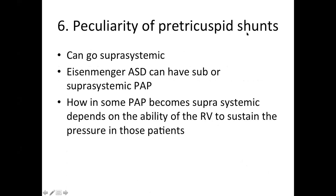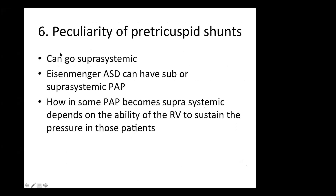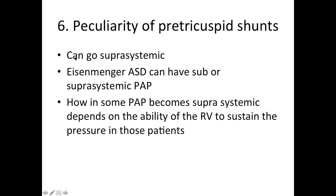A peculiarity of pre-tricuspid shunt compared to post-tricuspid shunt is that pre-tricuspid shunt can become suprasystemic, whereas post-tricuspid shunt cannot. So a patient with ASD and Eisenmenger syndrome can have subsystemic, systemic, or suprasystemic PA pressure. How it becomes suprasystemic in some patients depends on the ability of the right ventricle to sustain the pressure in those patients.